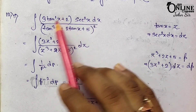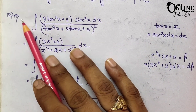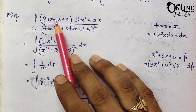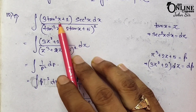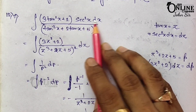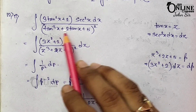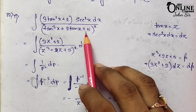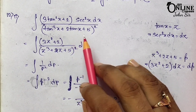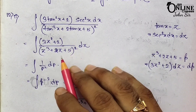Problem 12.2: ∫(3tan²x + 2sec²x) / (tan³x + 2tan x + 5)² dx. This problem is a little difficult. We will use a double substitution.